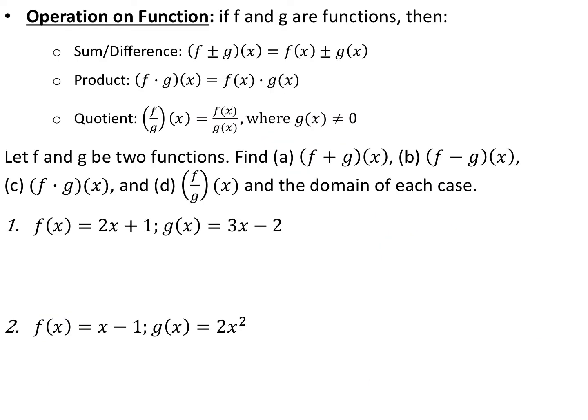The last topic is operations on functions. If you have two functions f and g, you can add, subtract, multiply, or divide them, and the result is also a function. The notation is: f plus or minus g of x equals f of x plus or minus g of x; f times g of x equals f of x times g of x; and f divided by g of x equals f of x divided by g of x. Division may create new domain issues. Note: a closed dot means multiplication — an open circle means composition, which we'll cover later.